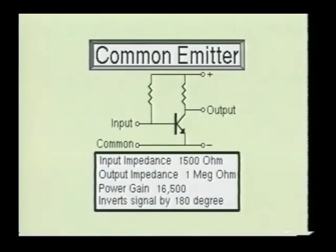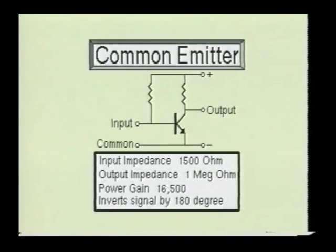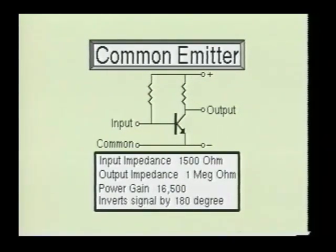The common emitter will have a typical input impedance of 1,500 ohms and the output impedance will usually be around 1 megaohm. The voltage gain will generally be about 330 with a current gain of 50, giving the common emitter a power gain of 16,500. You will also notice that the circuit inverts the phase of the incoming signal by 180 degrees. The common emitter is the most widely used of the three configurations.